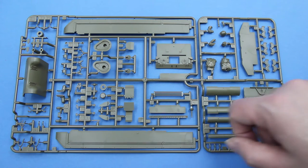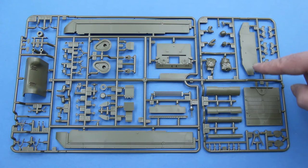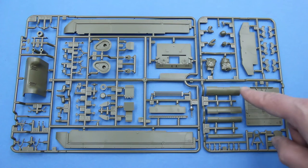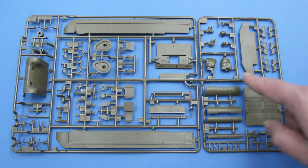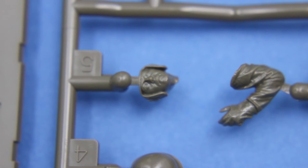Engine access doors. Rear of the hull plate. Exhaust deflector. Barrel crotch. Spare track links. And the figure.